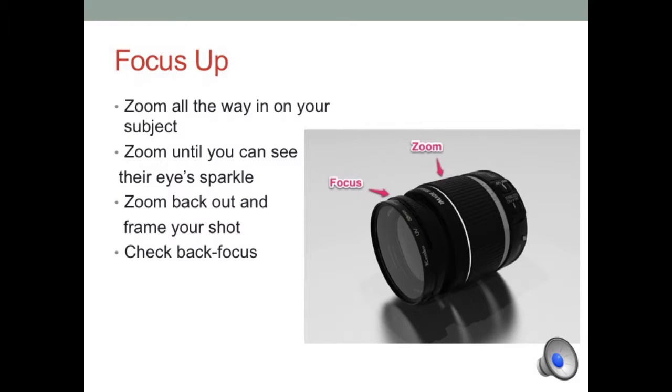So first we're going to talk about the focus. The focus is on the farthest part out from the body of the camera on the lens. So you can see here in the picture the zoom is first and then farther out is the focus. And so what we're going to do first is find something that you want to film and then zoom in on that. And of course it's probably going to look blurry. And so next take that little focus ring on the outside of the lens and turn it until it comes into focus.